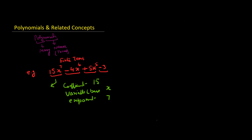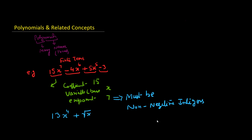The first thing you should note is that in any polynomial, the exponents must be non-negative integers. So if I have an expression 13x^4 plus root x, this is not a polynomial because root x means x raised to the power 1/2, which is not an integer — it is a rational number, a fraction. So this cannot be a polynomial.